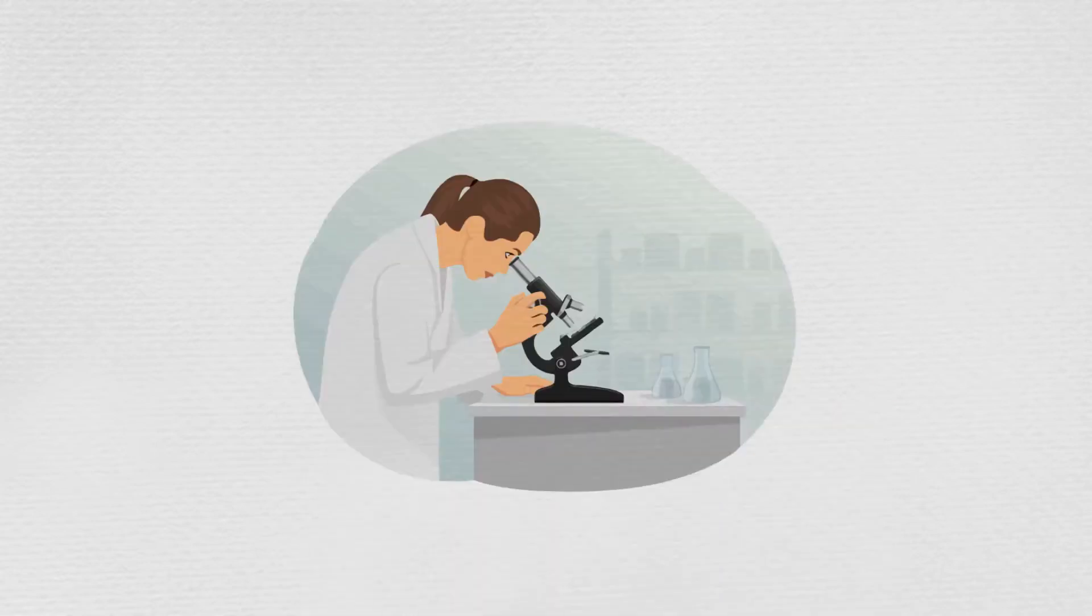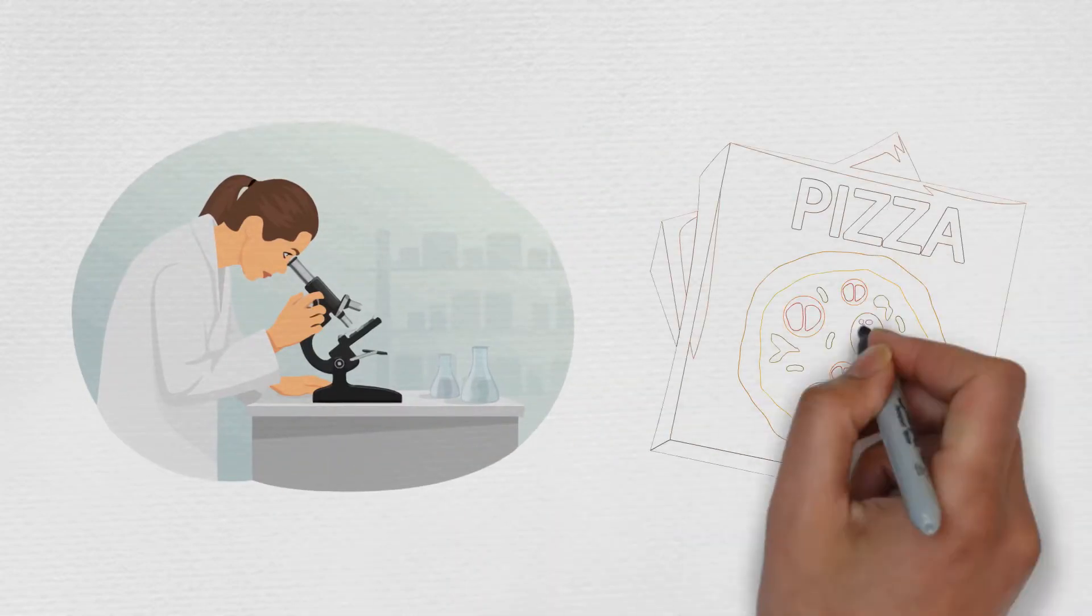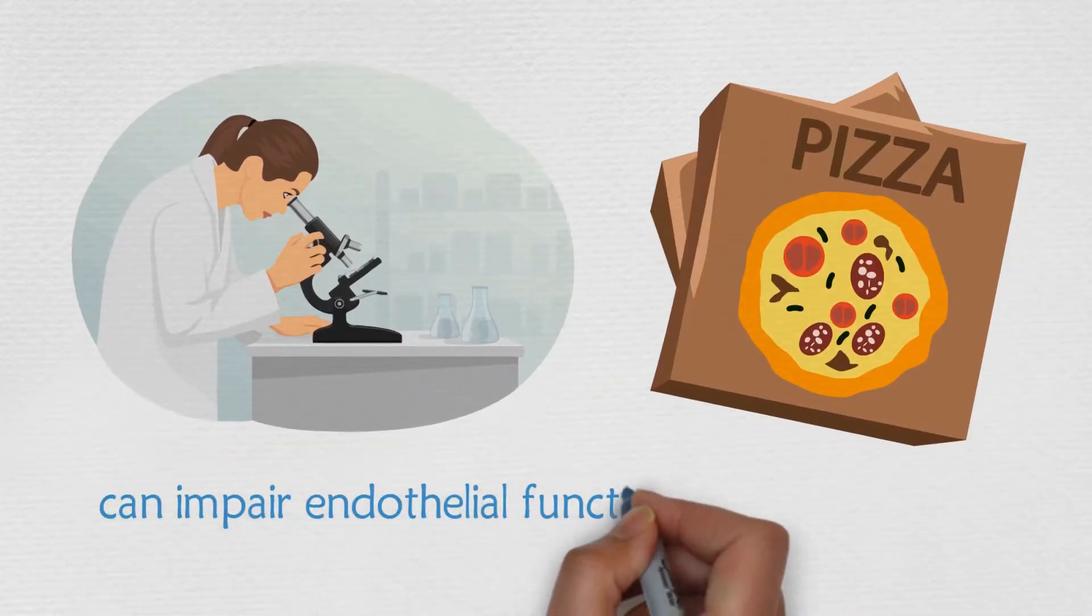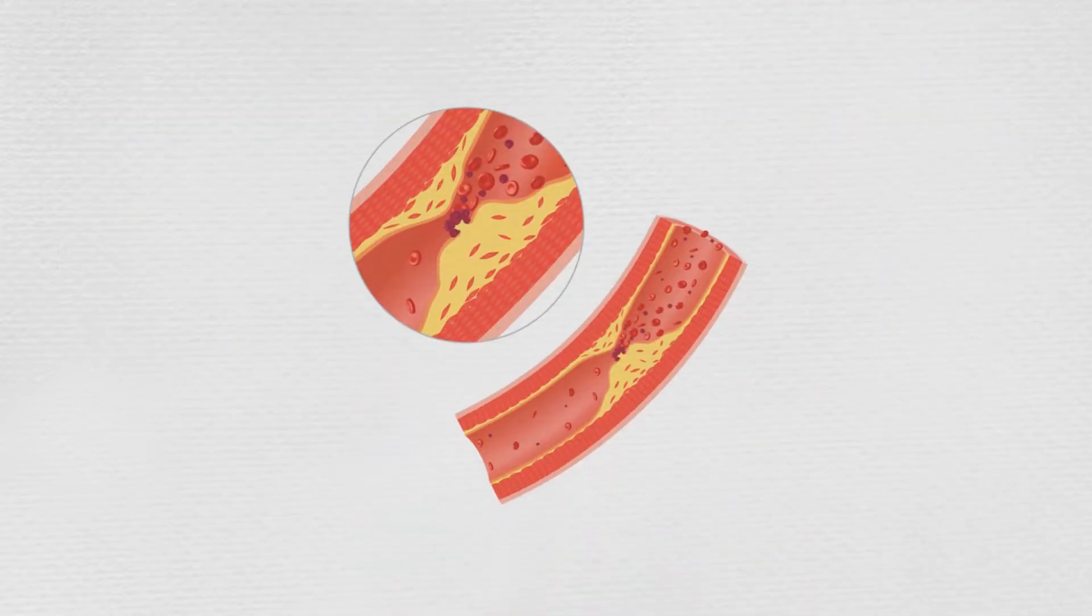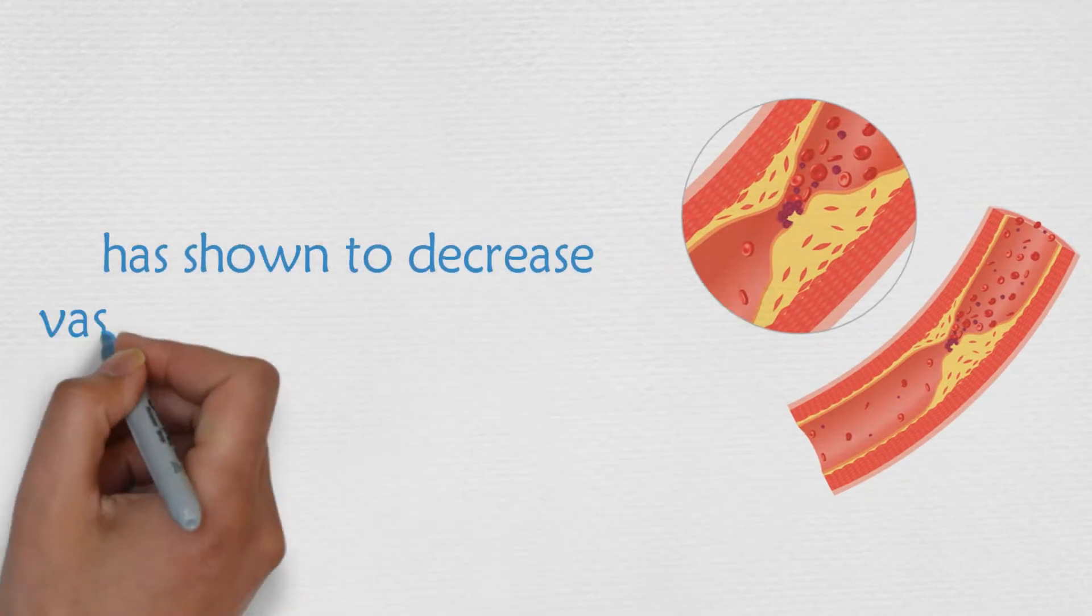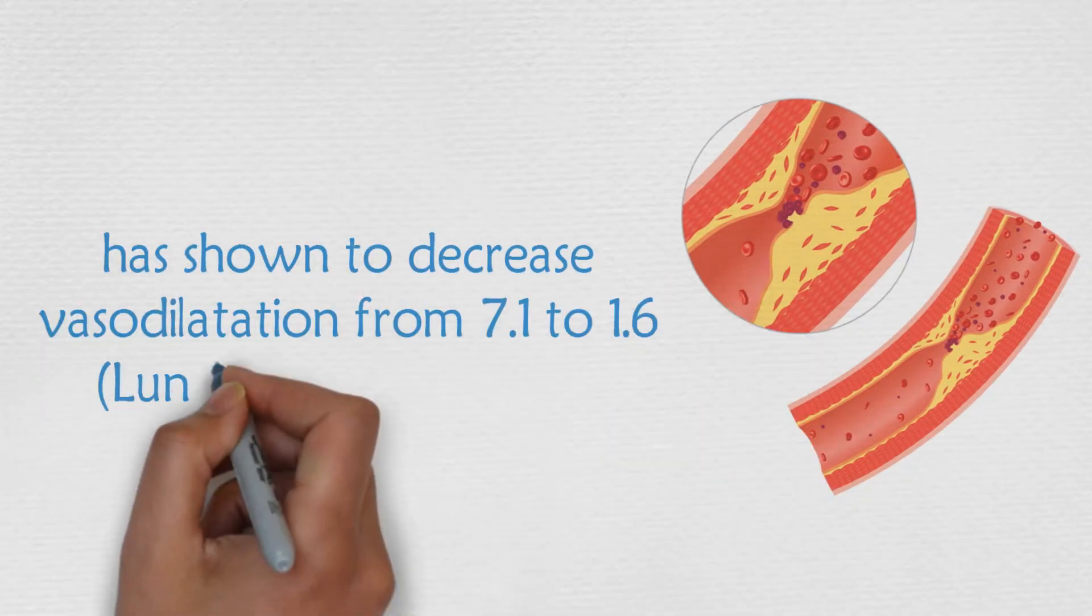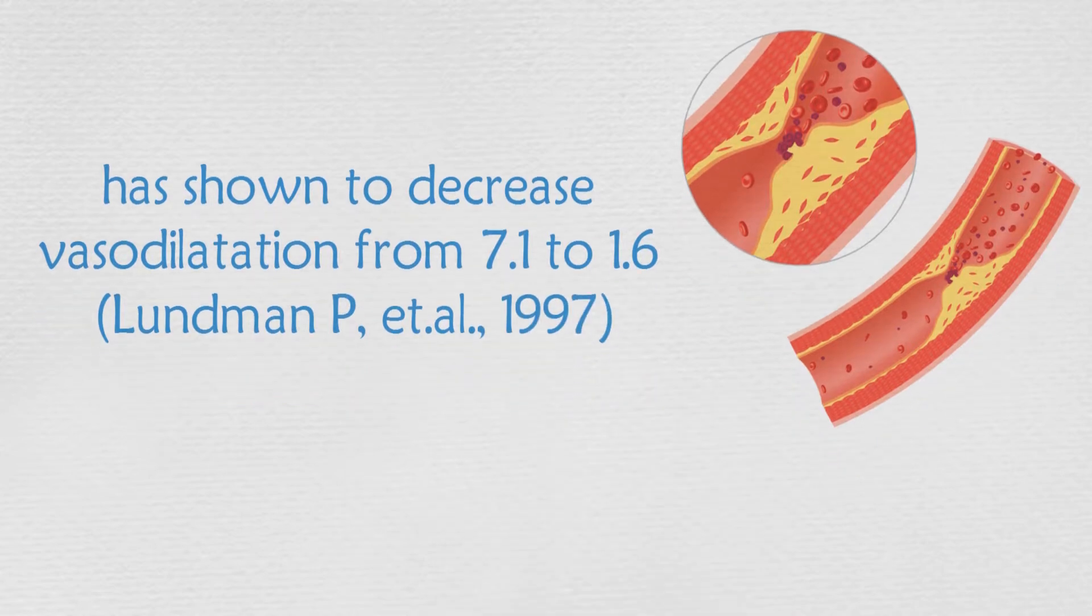Scientists have known for several years that just a single high-fat meal can impair endothelial function for several hours. Increased triglyceride levels, fat in the blood, has shown to decrease vasodilation from 7.1 to 1.6. This means the opening up of the blood vessels were decreased significantly.